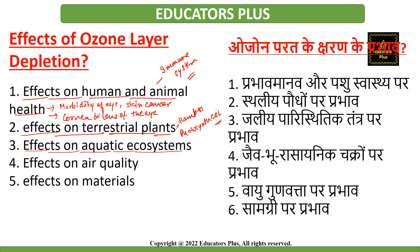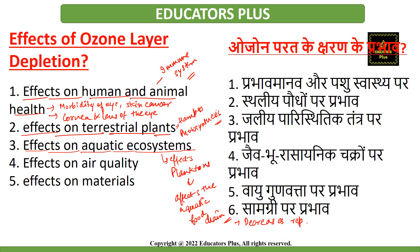When we talk about effects on aquatic ecosystems, planktons present in aquatic ecosystems are greatly affected by exposure to harmful ultraviolet radiations. If planktons are destroyed, organisms in the food chain are also affected. Exposure to solar UV radiations affects the orientation mechanisms and motility of phytoplankton, reducing their survival rates. Solar radiation damage is also caused in early developmental stages of fish, shrimp, crab, amphibians and other animals, decreasing their reproductive capacity and impairing larval development.